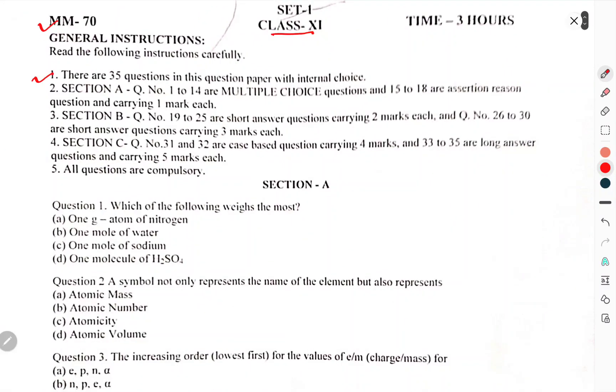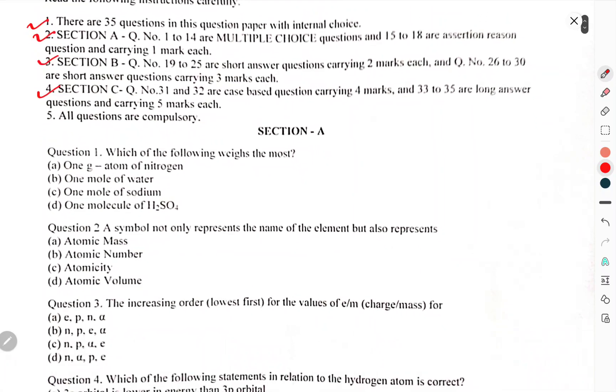There are 35 questions in this question paper with internal choices. Section A: Q1 to 14 are multiple choice questions, 15 to 18 are assertion-reason questions carrying one mark each. Section B: Q19 to 25 are short answer questions carrying 2 marks each. Q26 to 30 are short answer questions carrying 3 marks each. Q31 to 32 are case-based questions carrying 4 marks each, and Q33 to 35 are long answer questions carrying 5 marks each. All questions are compulsory.